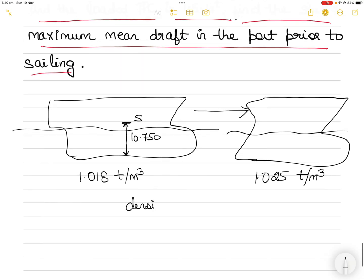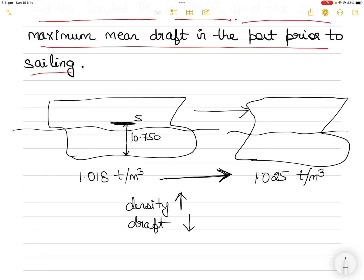As you proceed into the sea, the density will increase from 1.018 to 1.025. What happens to the draft? The draft will decrease — the vessel becomes lighter and will rise. That means although you can load maximum up to 10.750 meters (your summer draft), because you are going to rise due to the change in density, you can load slightly more than your summer draft.